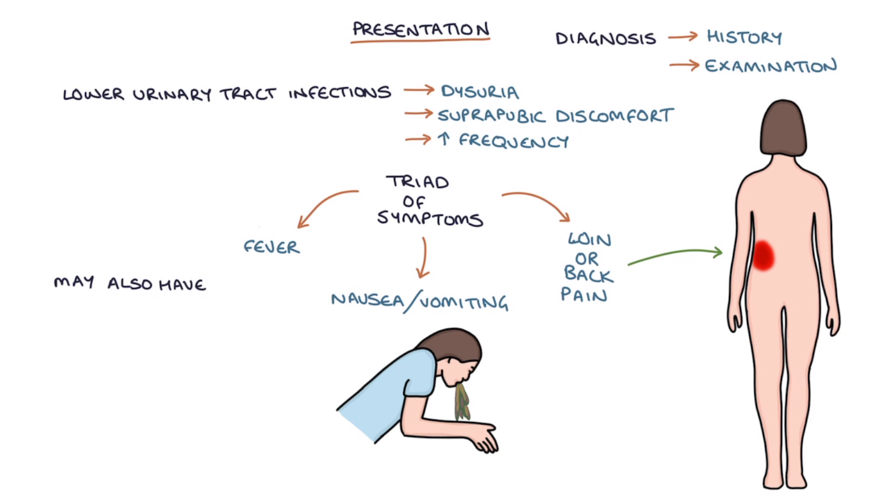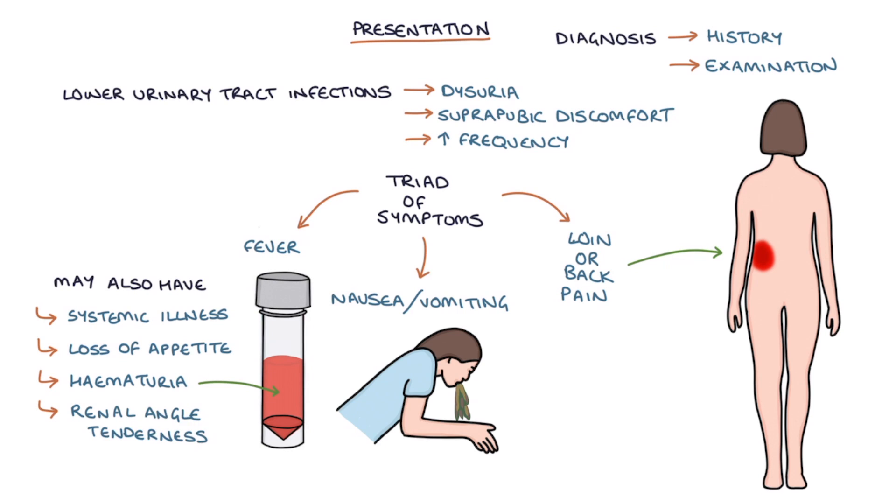Patients may also have systemic illness, for example they can become systemically unwell or septic, loss of appetite, hematuria with blood in the urine and renal angle tenderness on examination.